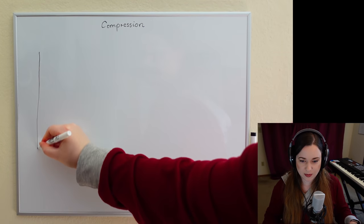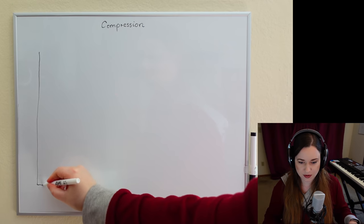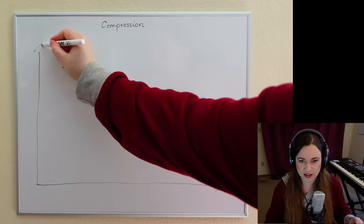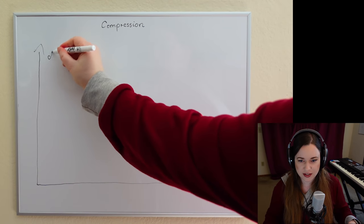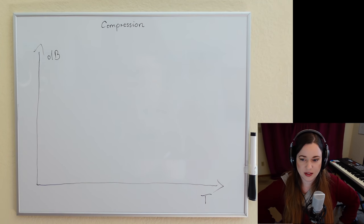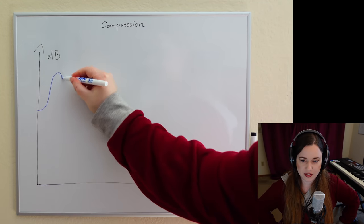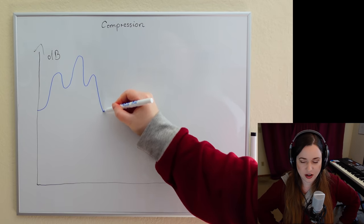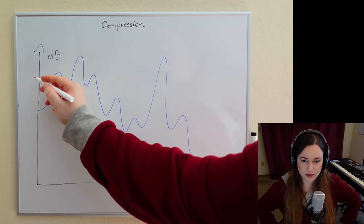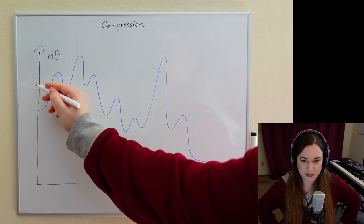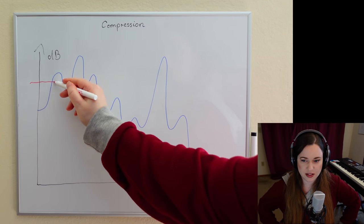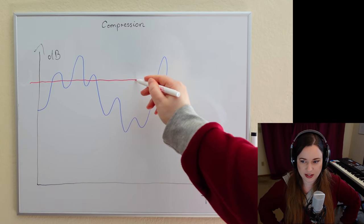All right, so here we go. The vertical axis is volume and the horizontal axis is time. We're drawing a waveform — just assume that's the audio. Then we pick a threshold somewhere so that some of the peaks are above it and the main portion of the signal is below it.